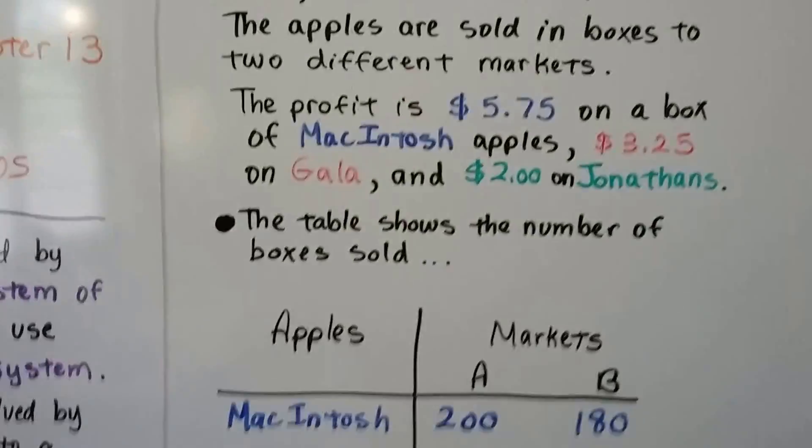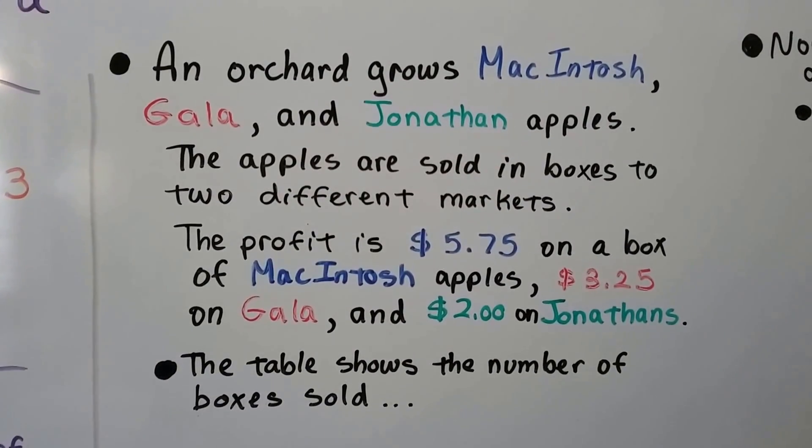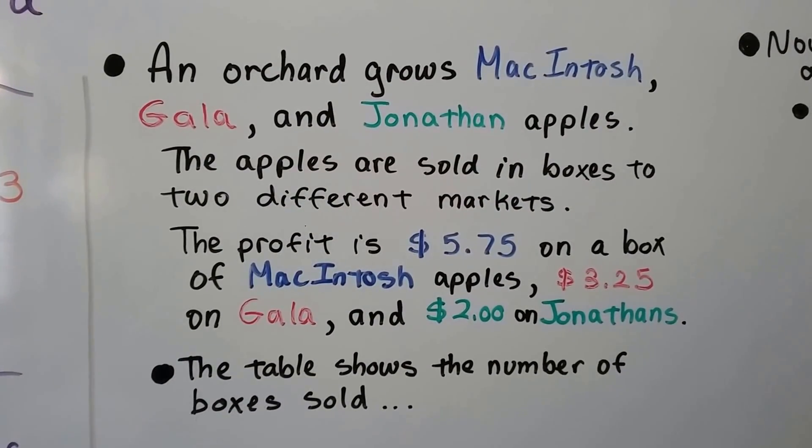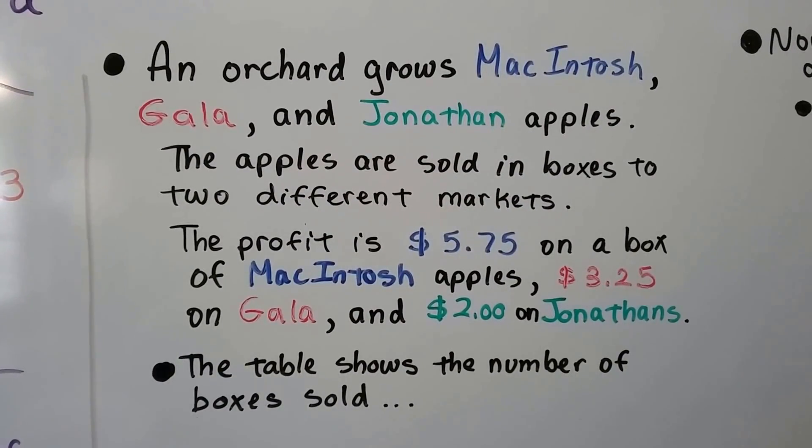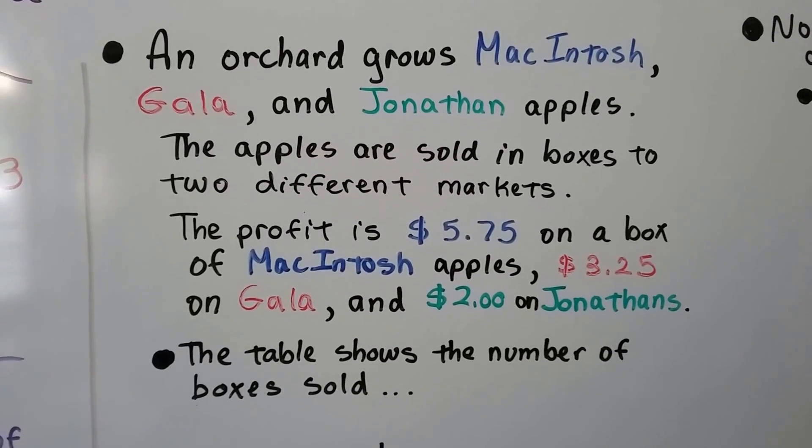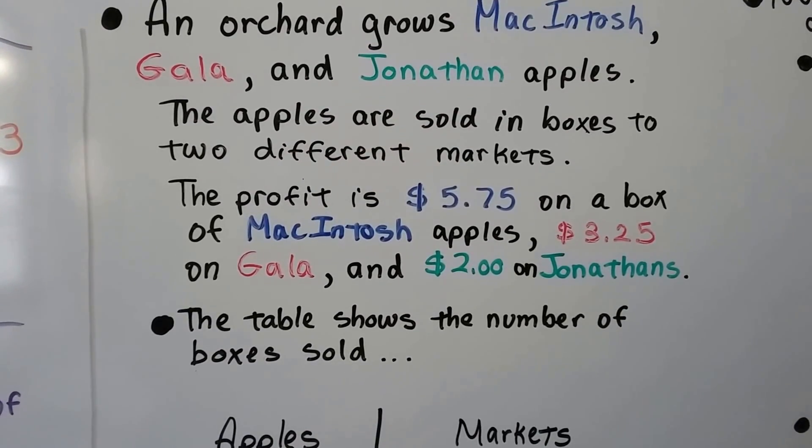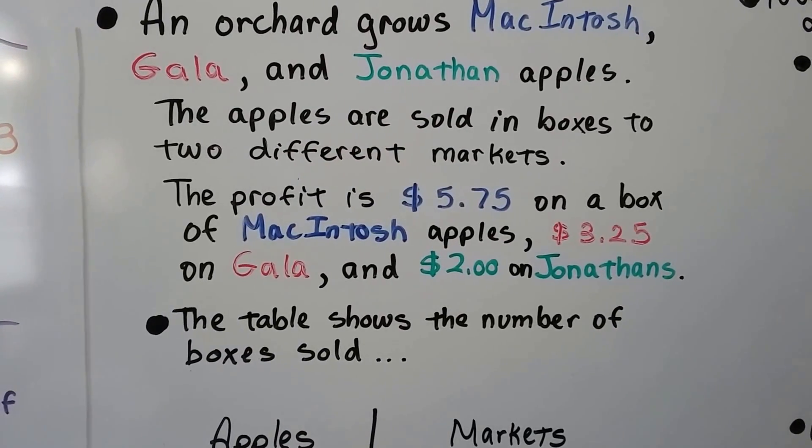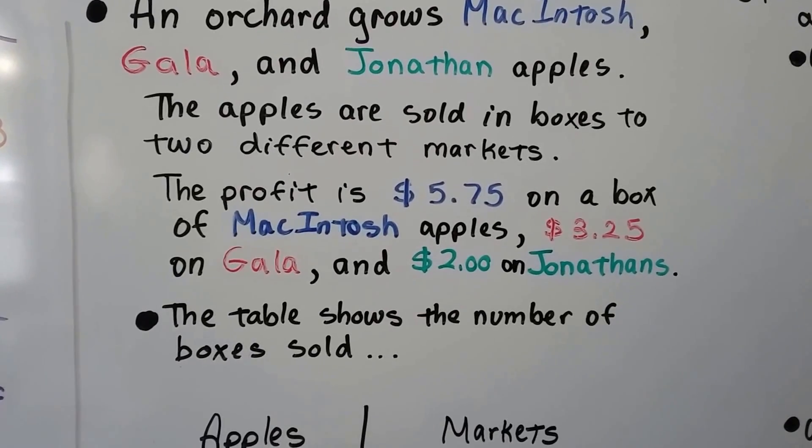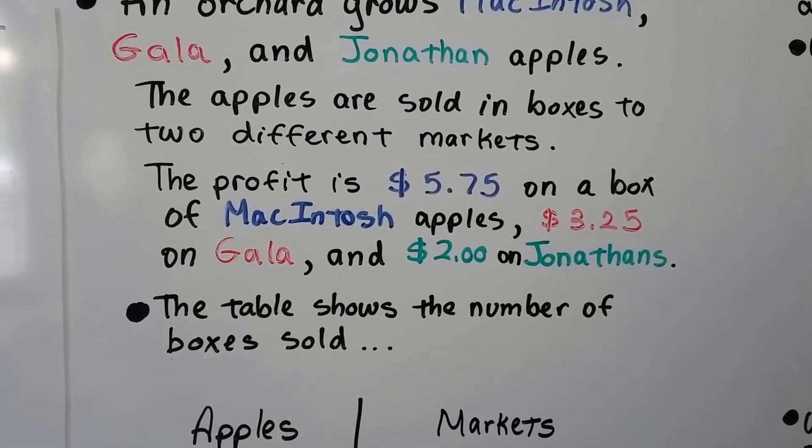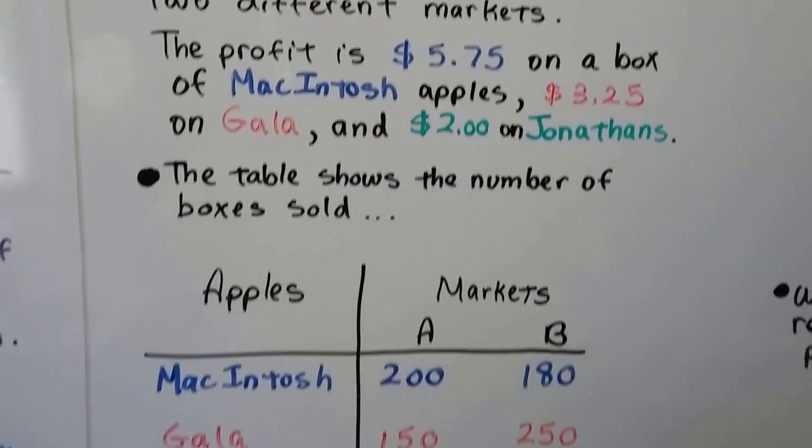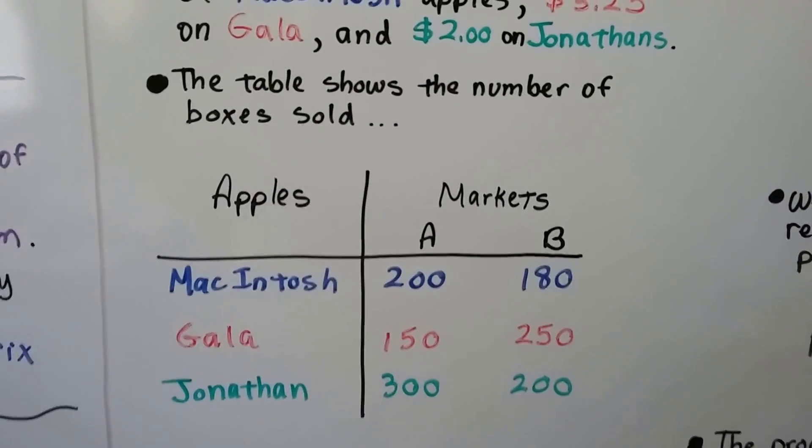We're going to talk about apples. An orchard grows Macintosh, Gala, and Jonathan apples. The apples are sold in boxes to two different markets. The profit is $5.75 on a box of Macintosh apples, $3.25 on Gala, and $2 on Jonathans. And this table shows the number of boxes sold.